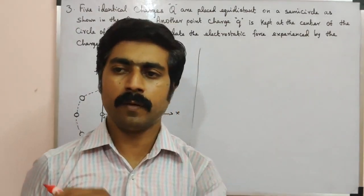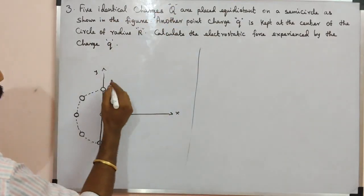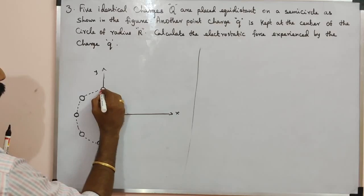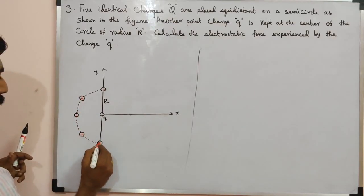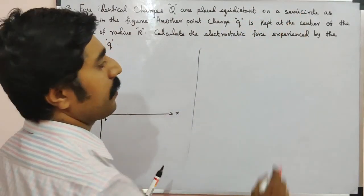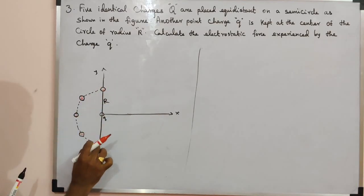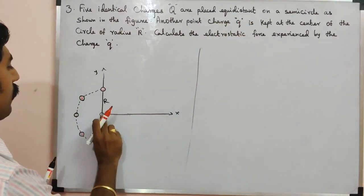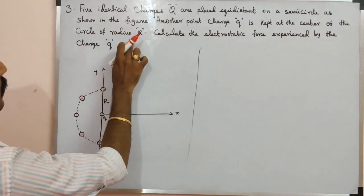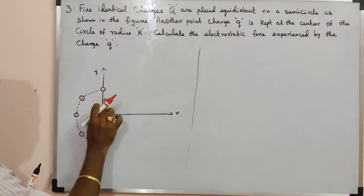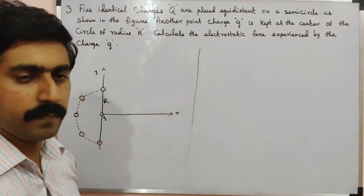5 identical charges — I am going to talk about the same type of charges. Positive is positive and negative is negative. So, 5 identical charges. Q is kept at the center of the circle of radius. In the semicircle center or radius, there is a charge Q. How to calculate the electrostatic force experienced by the charge Q?